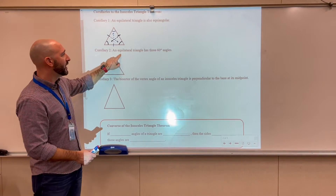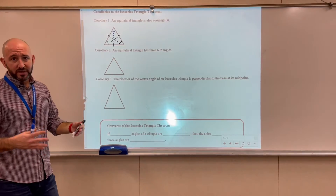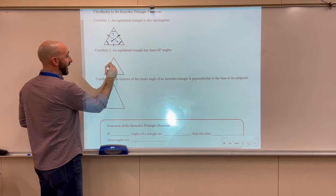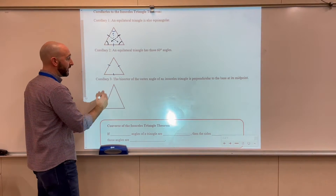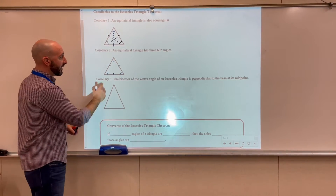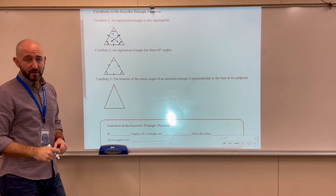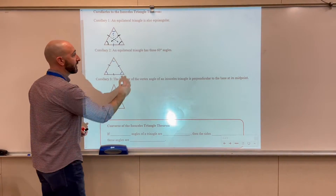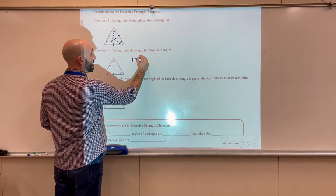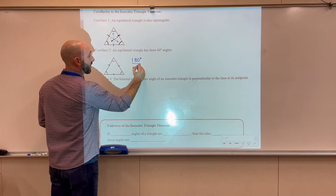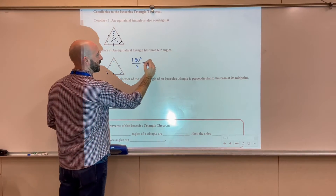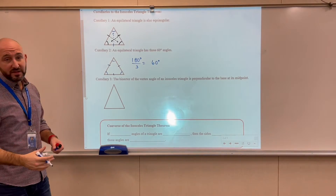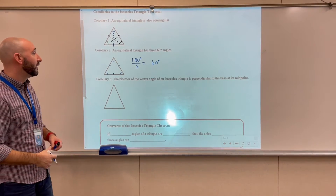Corollary number two: an equilateral triangle has 60-degree angles. Since an equilateral triangle is also equiangular, the measure of each interior angle is the same. We know that the sum of the interior angles of a triangle is 180 degrees, so if we divide that by three, we get 60 degrees. The measure of each interior angle of an equilateral triangle is 60 degrees.